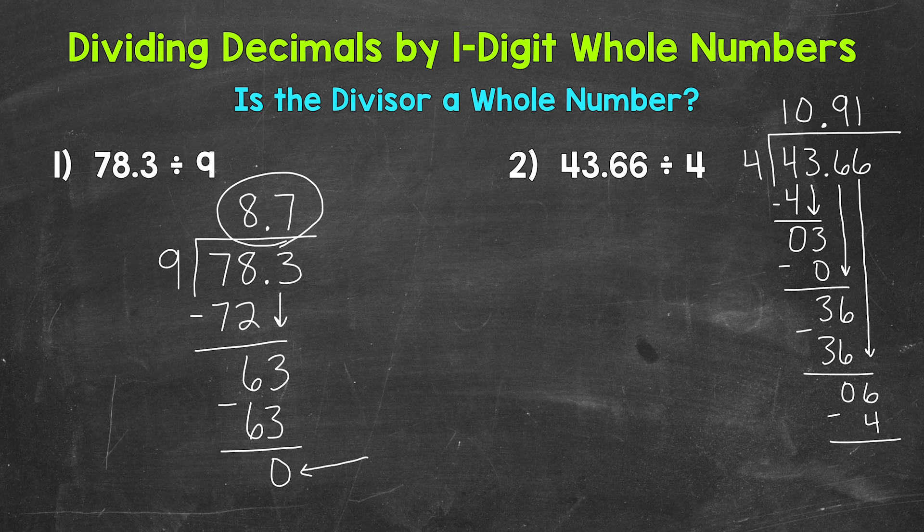6 minus 4 is 2. We went all the way over to the furthest place to the right, the hundredths place. But we have a 2 at the end. We do not have a clean cut 0 yet. That 2 does not mean remainder 2 like when we work with whole numbers. This answer is in decimal form. So we need to keep it that way.